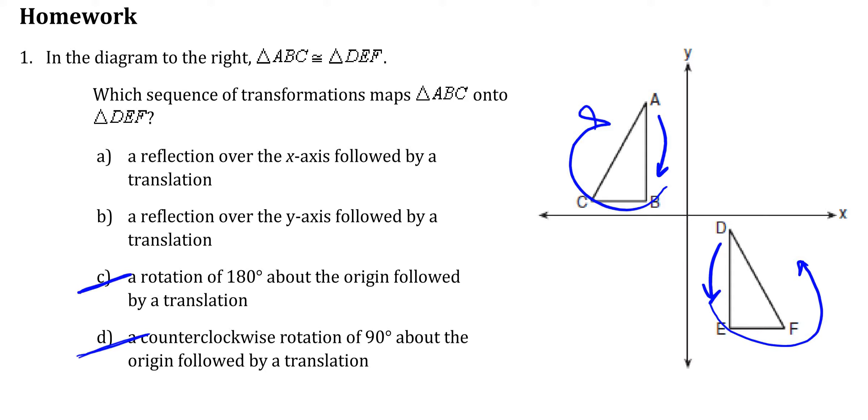If I reflect over the x-axis, my triangle would look like this. Well, not really the same as what I have there, so A doesn't make sense. The only one that makes sense is B.